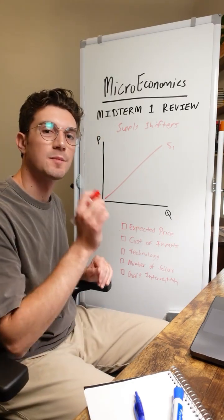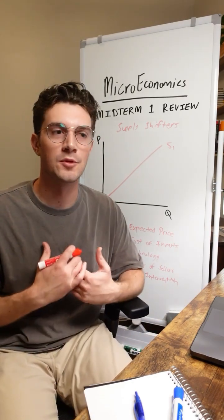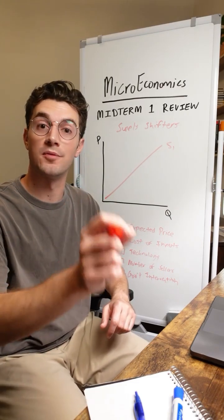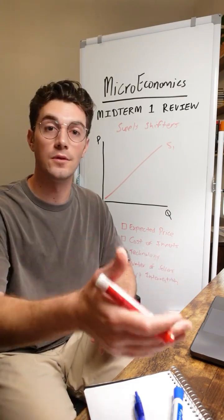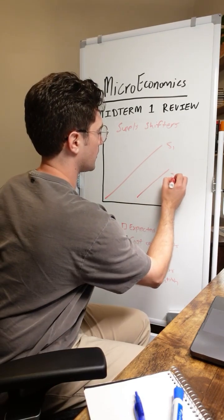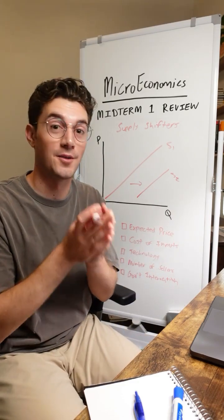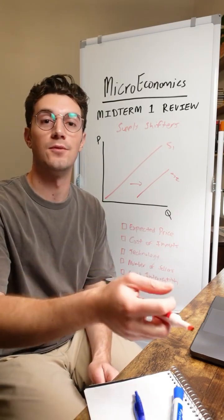All right, first shifter here is expected future prices. As a producer, imagine that you were selling a good to the market. If you expect the prices of your good to fall in the future, that's going to increase your current supply of the good. We'll shift the curve to the right because as a producer, you're going to want to sell now before price falls in the future.